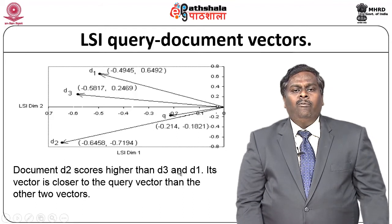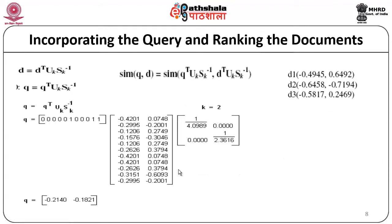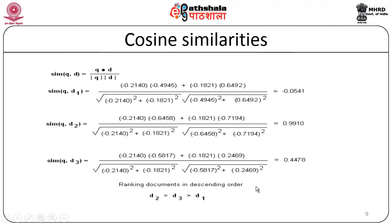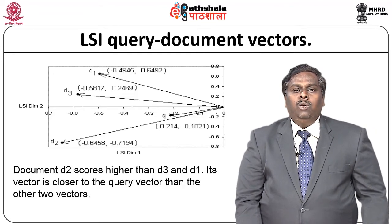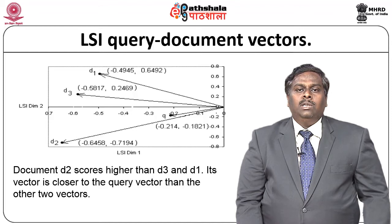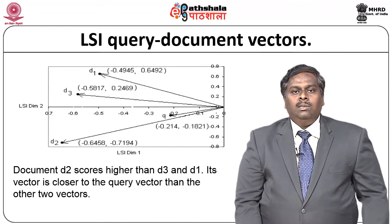Query Q is very close to document D2's vector rather than D3 or D1. When comparing D3 and D1, the query is more similar to D3 than D1. So document D2 scores higher than D3 and D1, and the vector for D2 is very close to the given query vector. The scatter plot clearly confirms that document D2 is the correct and relevant answer for the given query.